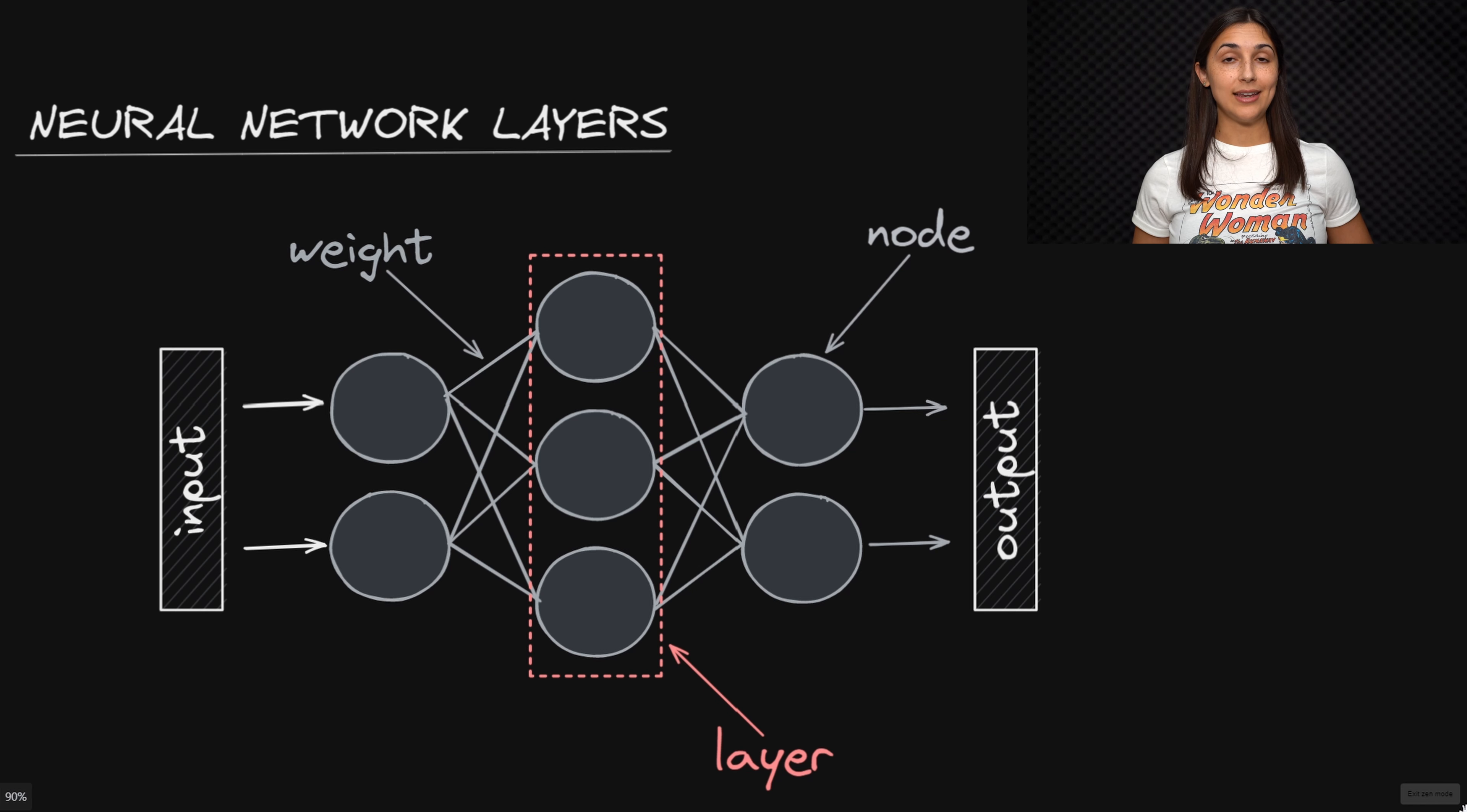We'll elaborate on the different aspects of these layer types in future lessons. When data is passed as input to a given layer, the nodes in that layer process the data before passing the output from that layer as input to the next layer.